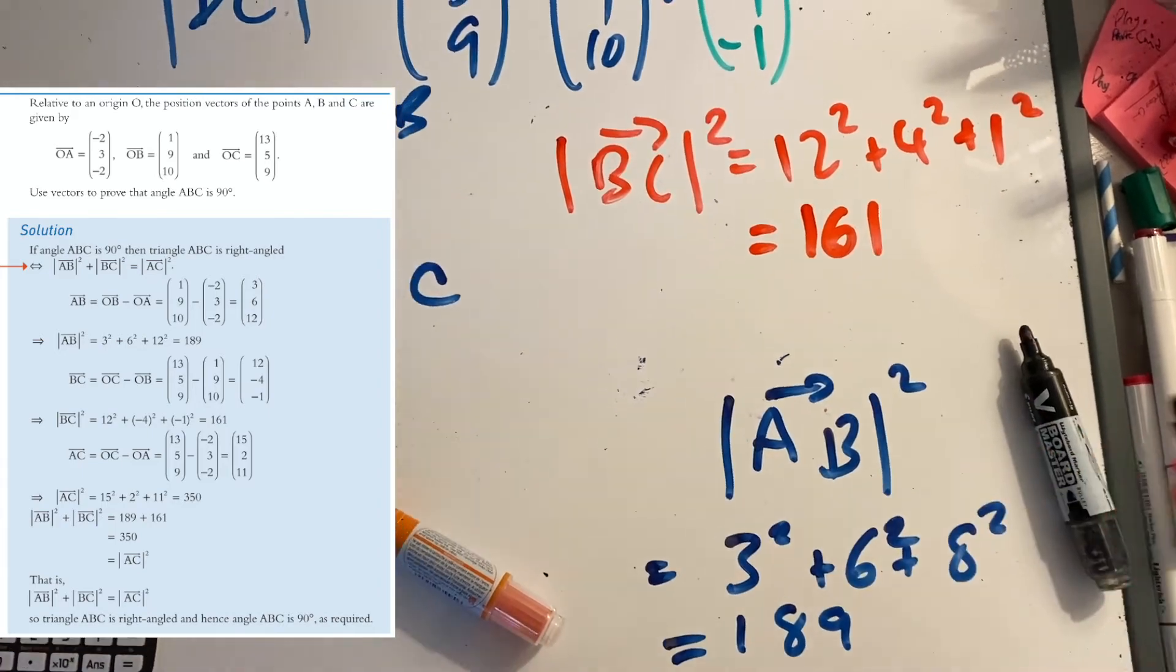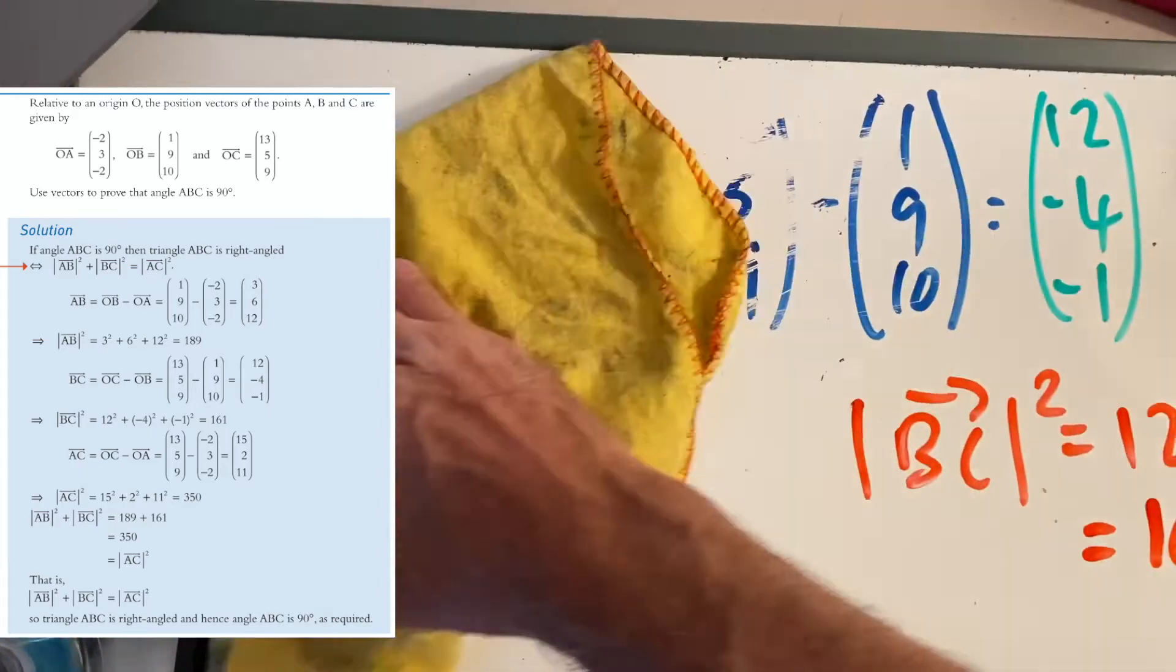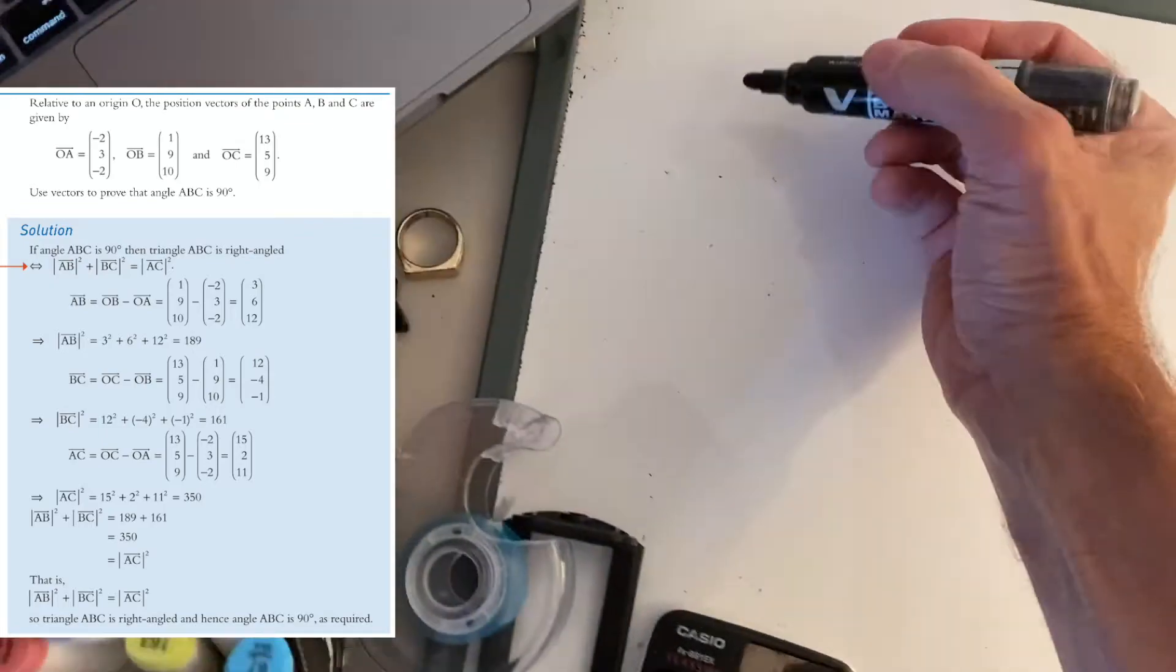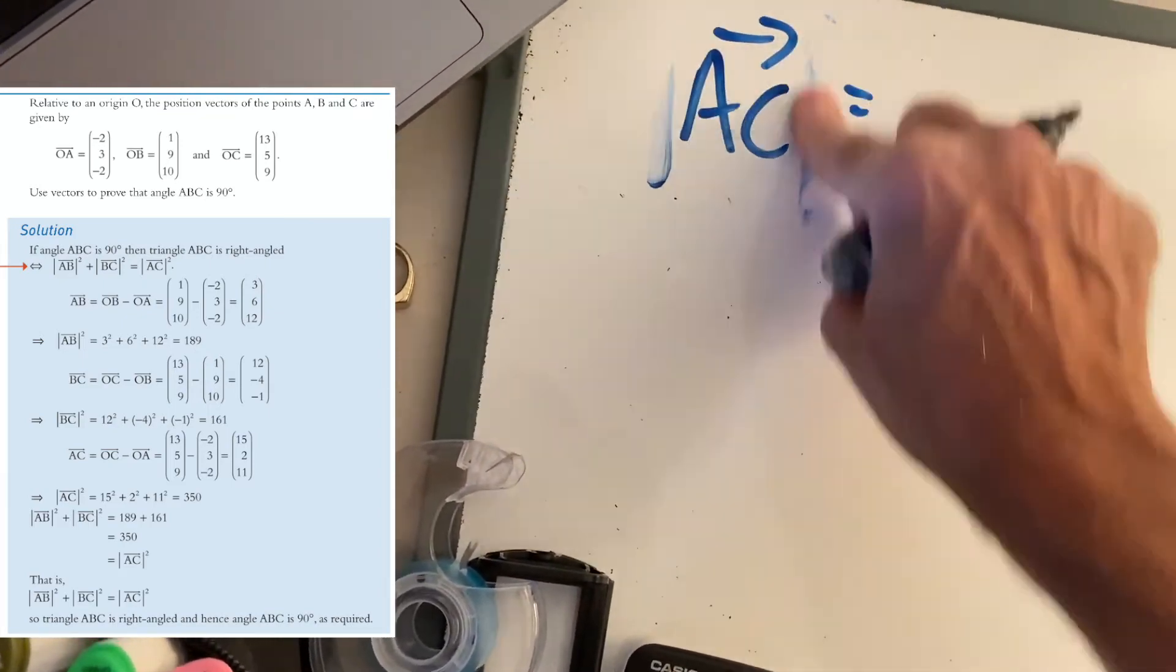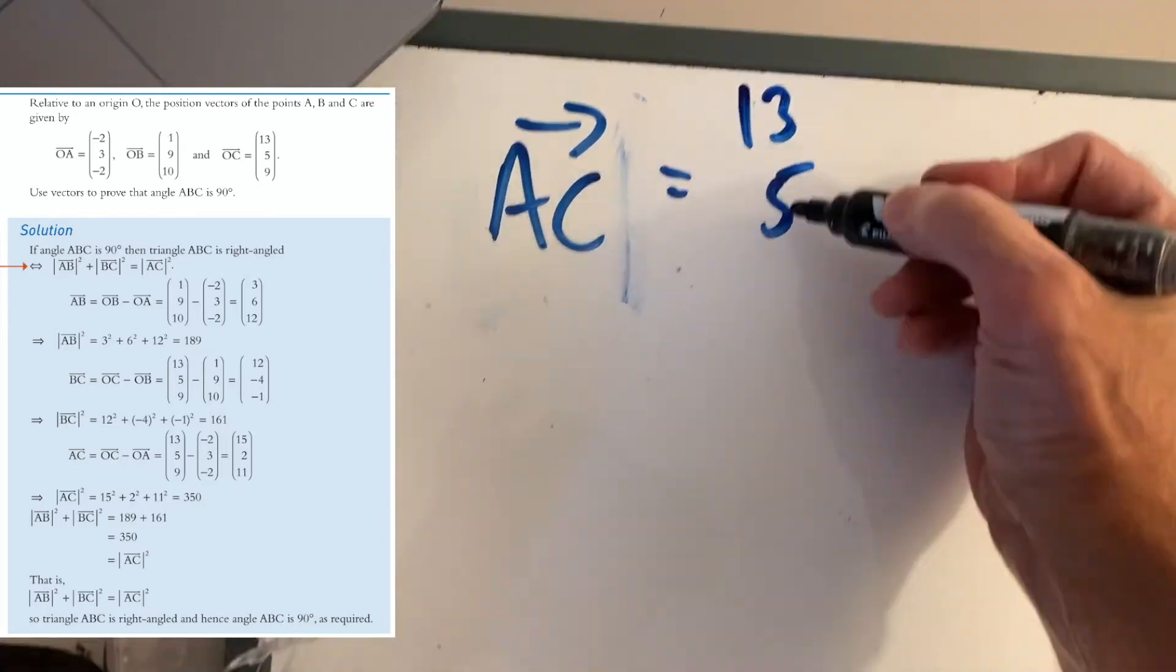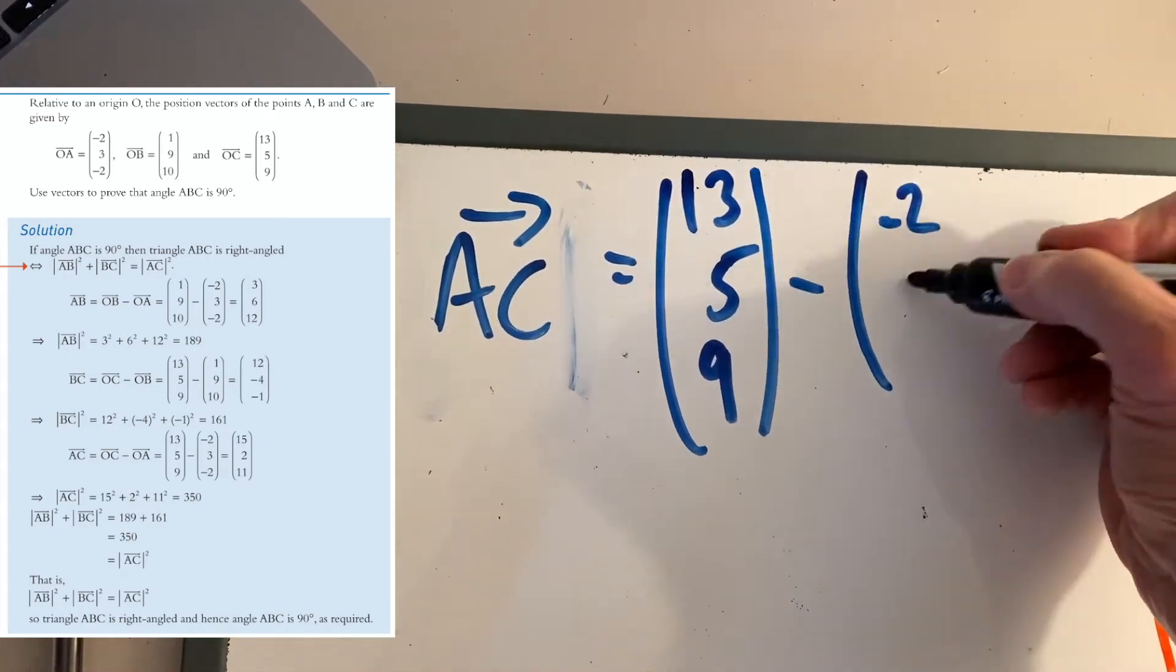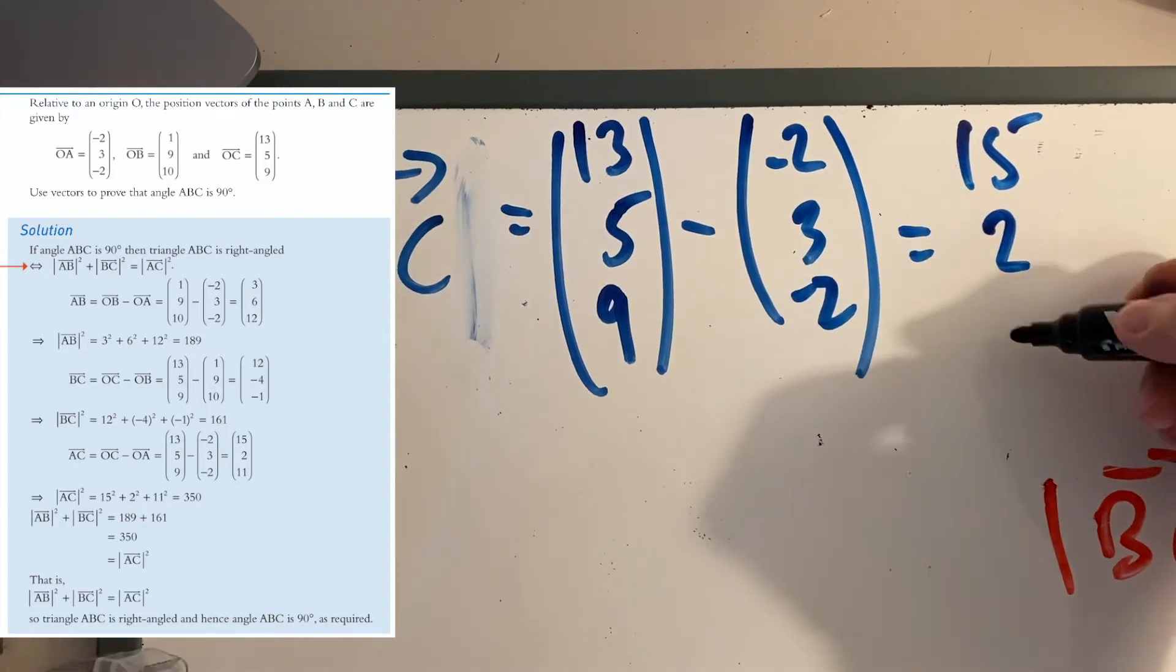Let's do that now—AC. We know with AC, first of all let's look at the vector movement of AC. We know it's going to be the same idea: OC - OA. So OC - OA: (13, 5, 9) minus (-2, 3, -2). So that comes to (15, 2, 11).